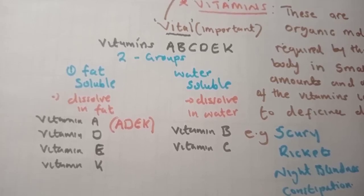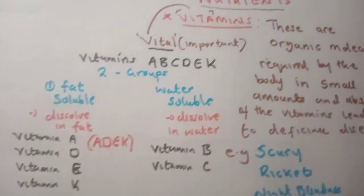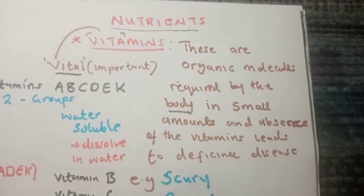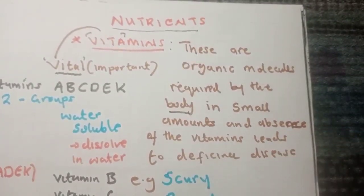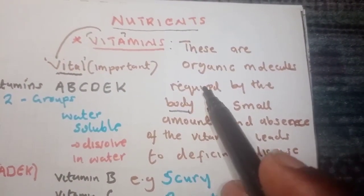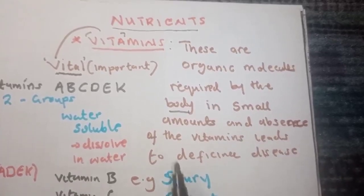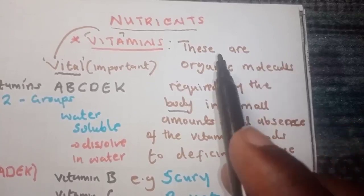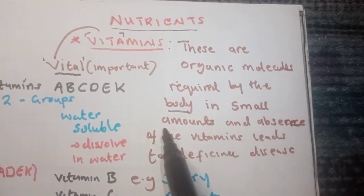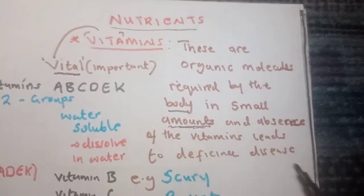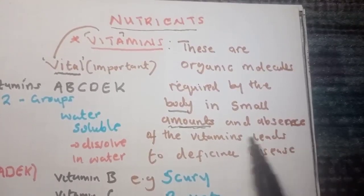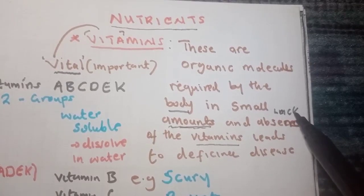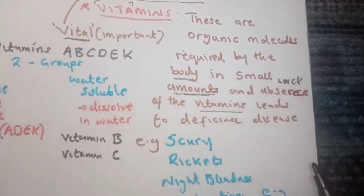Vitamins are organic molecules required by the body. For something to qualify as a nutrient, it needs to be something the body requires. These organic molecules are required by the body in small amounts, but their absence — when we lack them — leads to deficiency diseases.